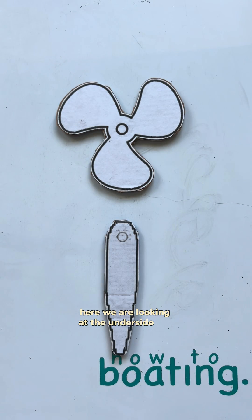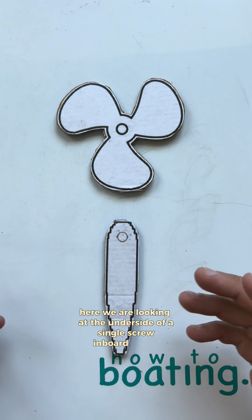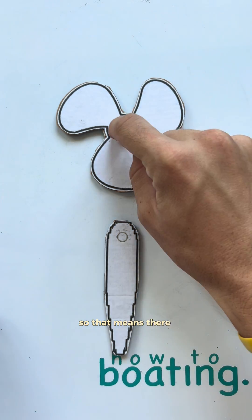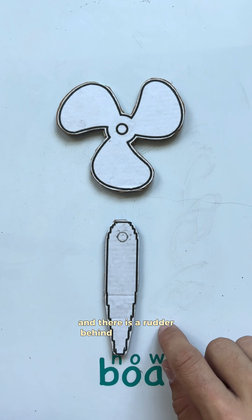Here we are looking at the underside of a single screw inboard vessel. So that means there is a propeller and there is a rudder behind the propeller.